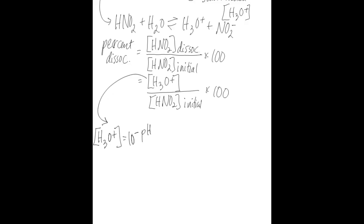For this problem, pH is 2.32, so the hydronium ion concentration equals 10 to the negative 2.32, which equals 0.00479. This will be the numerator when calculating percent dissociation.